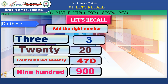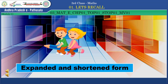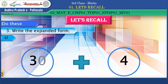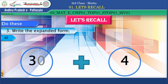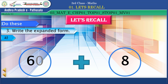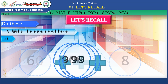We now move to the next activity: expanded and shortened form. Here two or three circles are there. In the circles some numbers are there — shall we separate them into expanded form? The number is thirty-four. We separate it: thirty plus four equals thirty-four. Next, in the circle: sixty-eight. Separated: sixty plus eight equals sixty-eight.